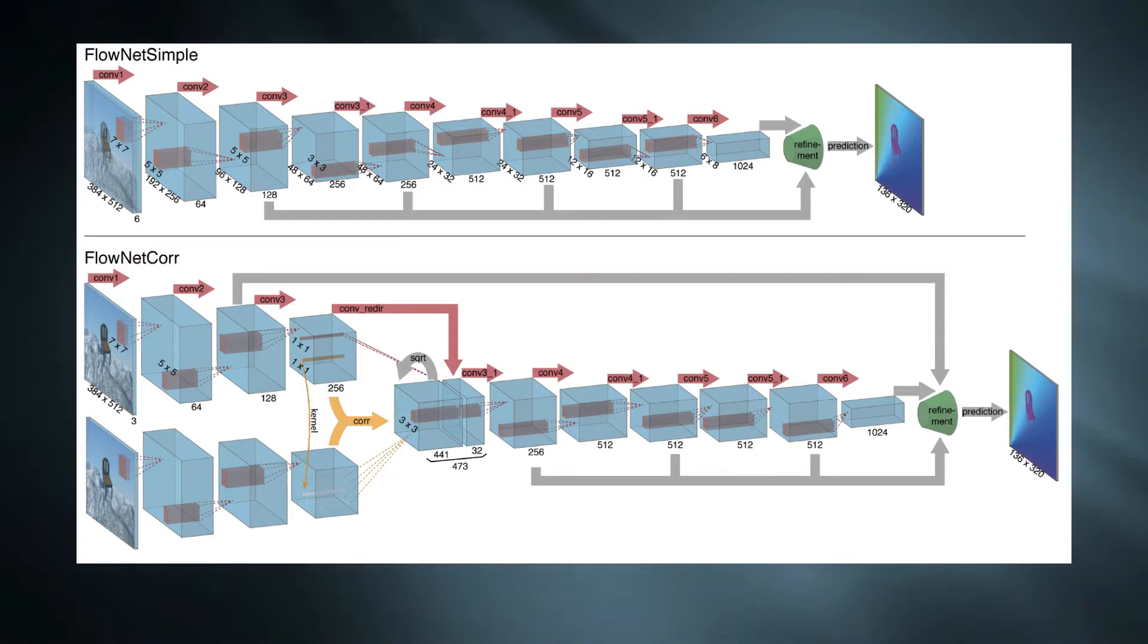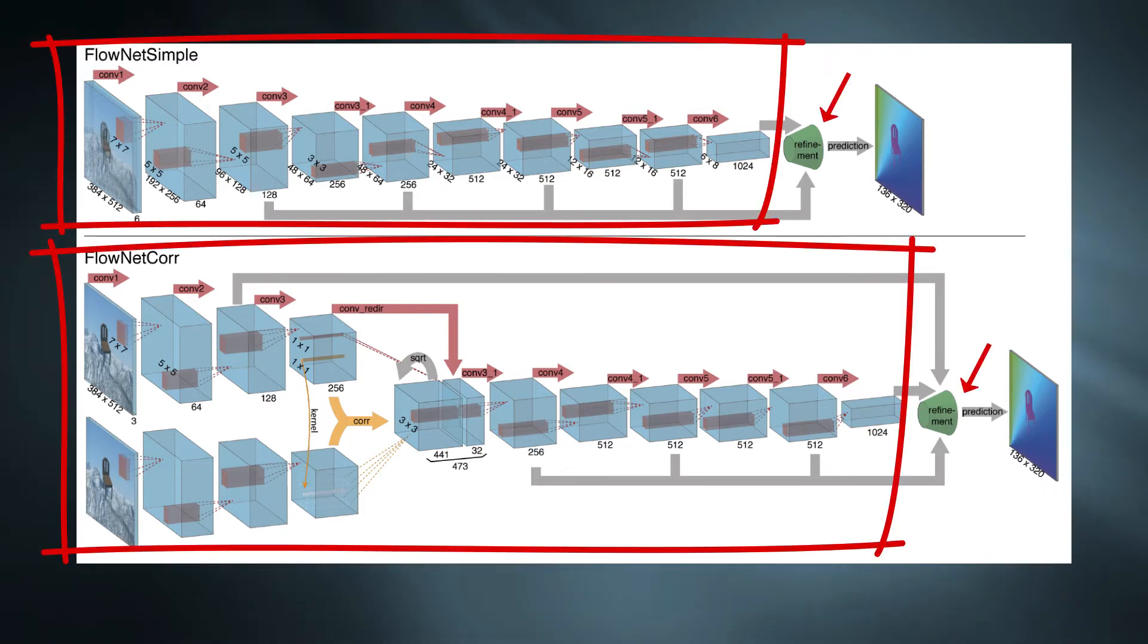Now, let's look at the models in detail. Both of these have two parts: contracting part and refinement part. In the contracting part, feature representation and matching information are learned from the input image. In the refinement part, the features are converted to per-pixel optical flow prediction. This part is same for both architectures.